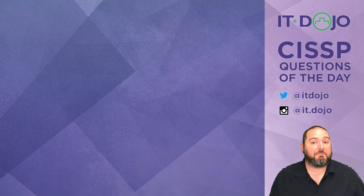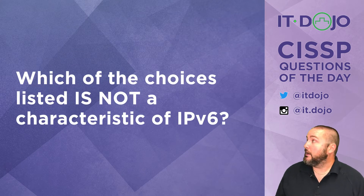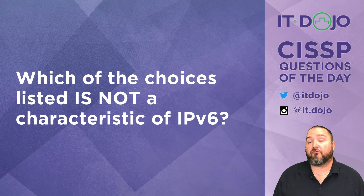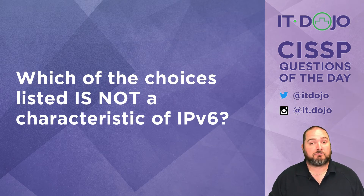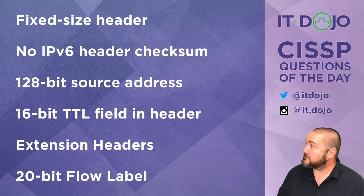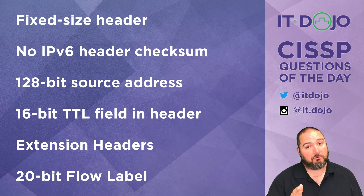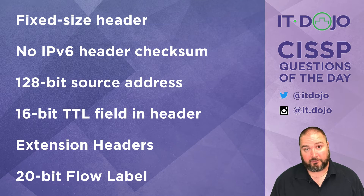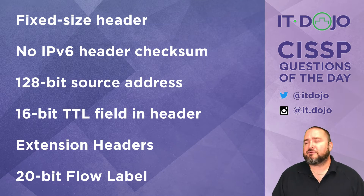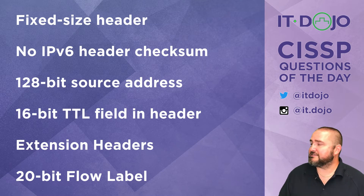Here comes question number two — IPv6 this time. What I want to know is: given this particular list, which of them are NOT characteristics of IPv6? Click pause if you need to give that list a read, and when you're ready click play.